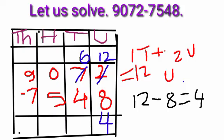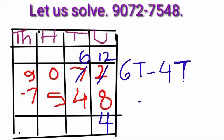6 tens minus 4 tens is equal to 2 tens. 2 tens remains in the tens place.